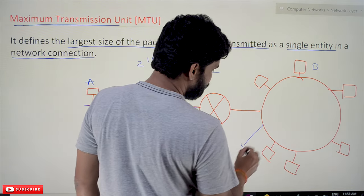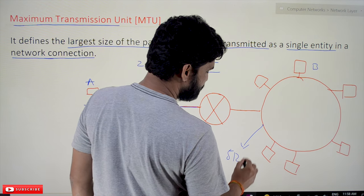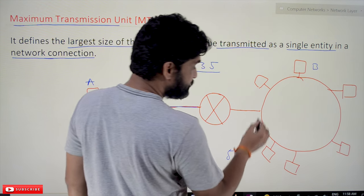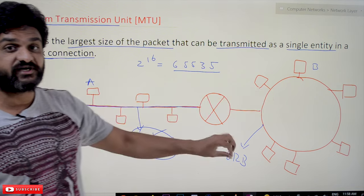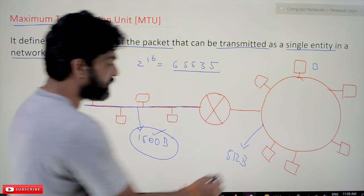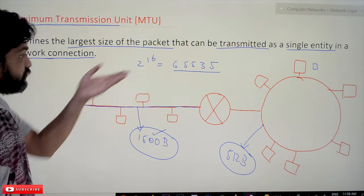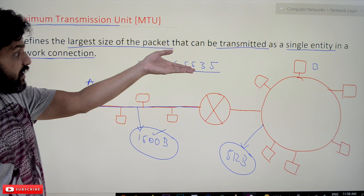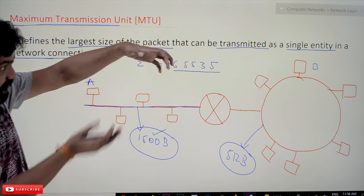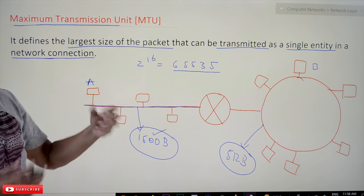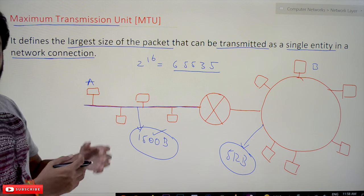For example, if this network has a capacity of 512 bytes, then the MTU for that network is 512 bytes.